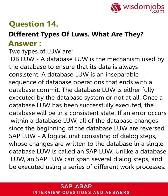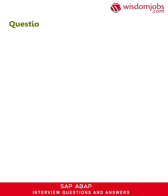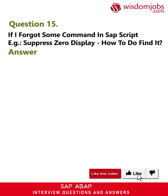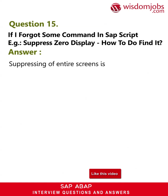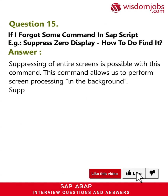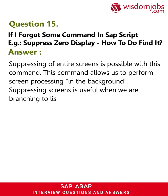Question 15: If I forgot a command in SAP Script — for example, suppress zero display — how do I find it? Answer: Suppression of entire screens is possible with this command. This command allows us to perform screen processing in the background. Suppressing screens is useful when we are branching to list mode from a transaction processing in the background.